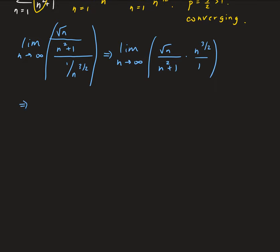So now this is going to give us, n to the one half times n to the three halves, that's going to give us n squared. On the bottom, we end up getting n squared plus one.